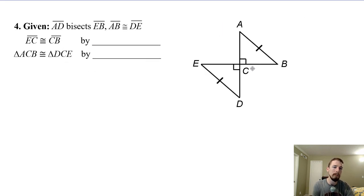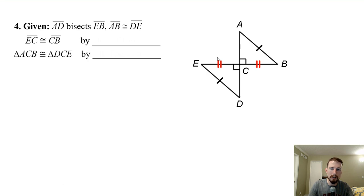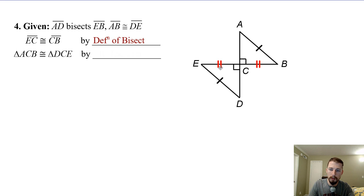Number four: AD bisects EB, meaning it's going to cut it in half. So EC is going to be congruent to CB because of the definition of bisect — that's what it means to bisect something, you cut it in half. Then we have a triangle congruency statement: we have angle-side-side, but we have a hypotenuse and a leg and a right triangle. So this would be the hypotenuse-leg theorem.